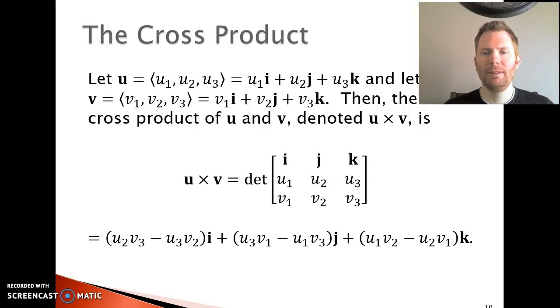Here is the actual definition of the cross product. You see that we have two vectors, vector u and vector v, which you can write either in component form or in terms of i, j, and k vectors. The cross product of u and v, which we denote u cross v, is given by the determinant of this matrix. Notice that the first row entries in this matrix are the i, j, k vectors, the standard basis vectors. Then we put the components of vector u in the middle row and the components of vector v on the bottom row.